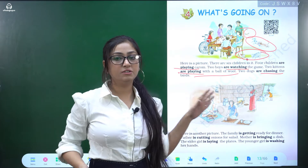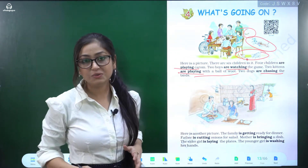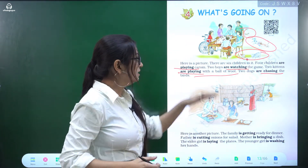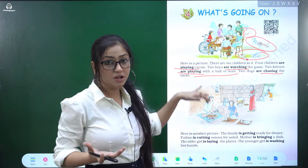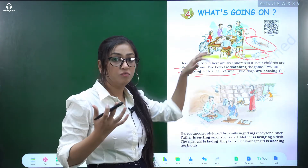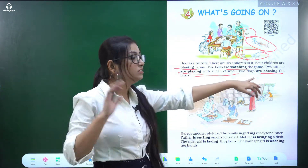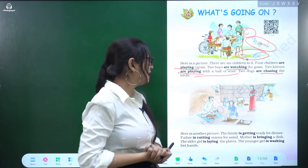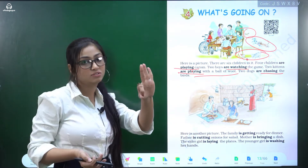Okay students, so what activities were happening? What actions were happening? There was play, watch, and chase. So we learned about three actions.